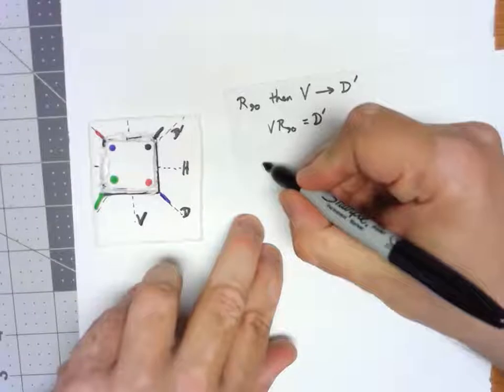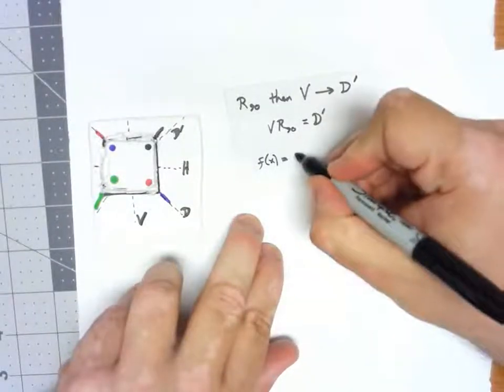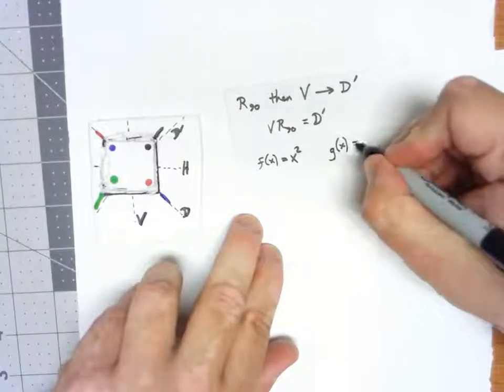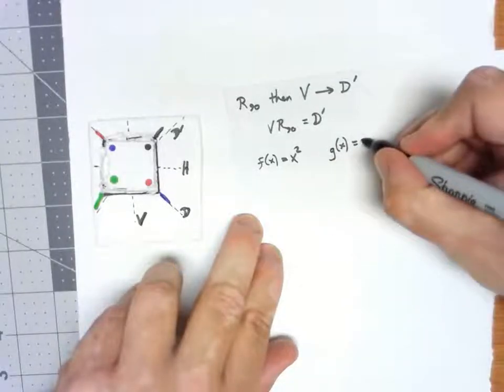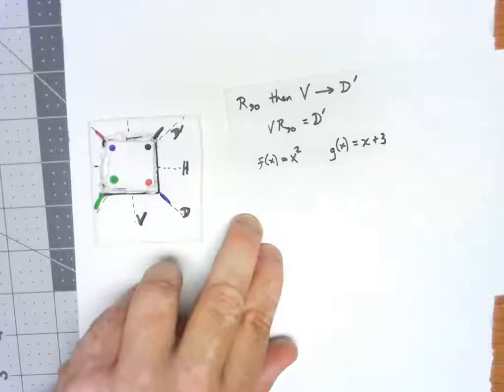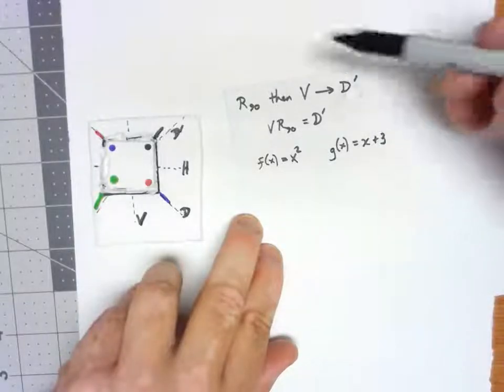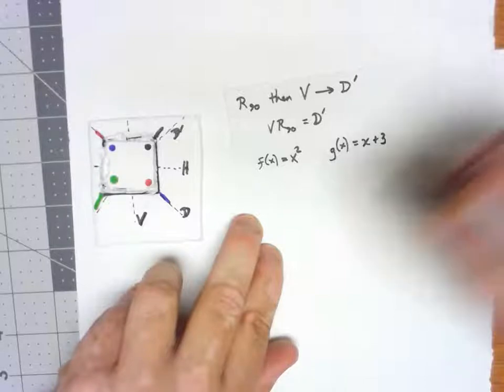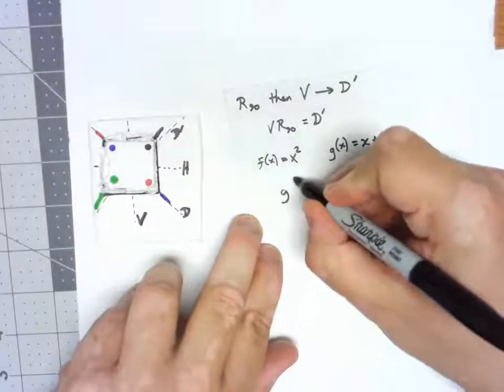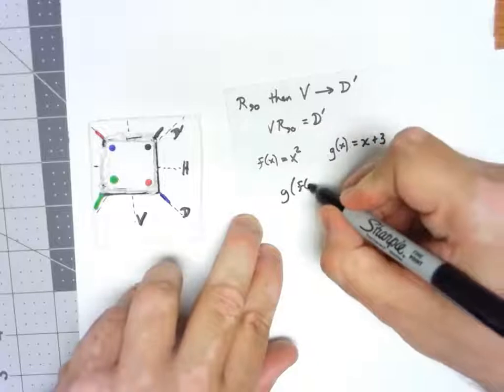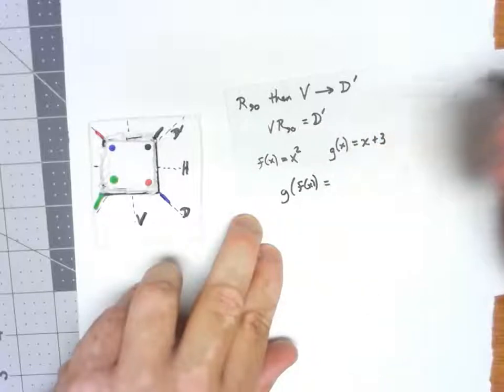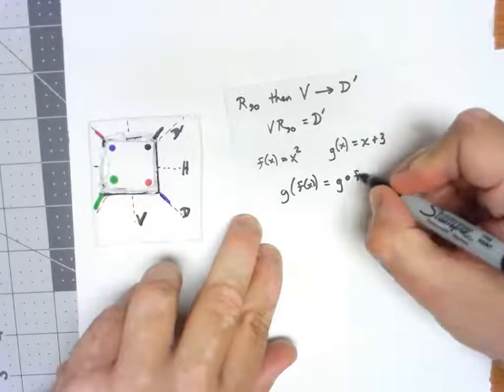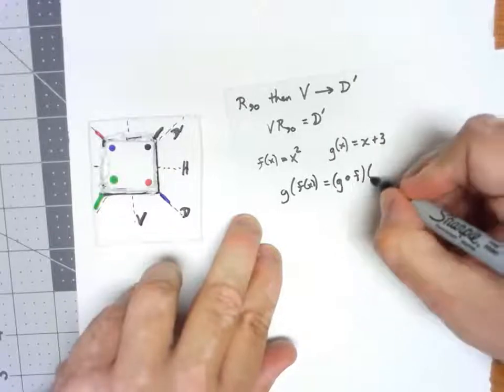If you had two different functions like f of x is equal to x squared, and g of x is equal to x plus 3, and you wanted to do f then g, you would write g of f of x, or in another way you would write it g composed with f of x.